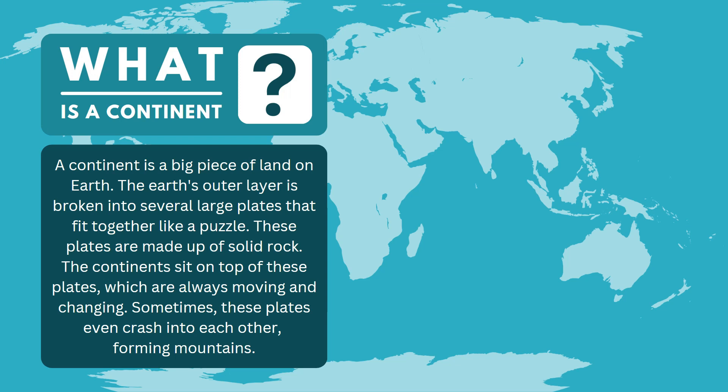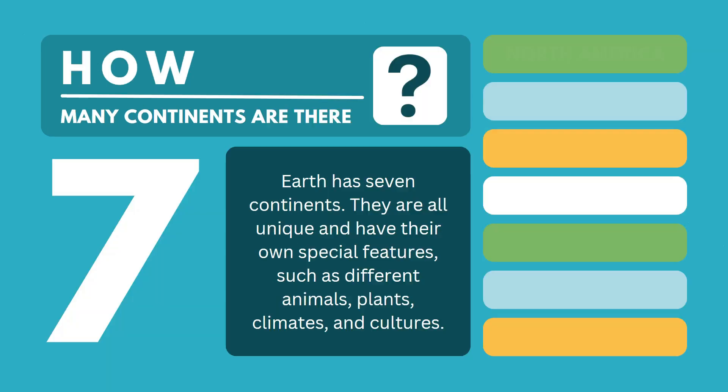First of all, let's think back. What is a continent? A continent is a big piece of land on Earth. The outer layer is broken into several large plates that fit together like a puzzle. They're made up of solid rock. The continents sit on top of these plates and they're always moving and changing. Sometimes they even crash into each other, forming mountains and causing earthquakes.